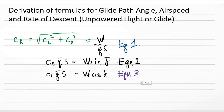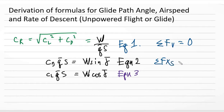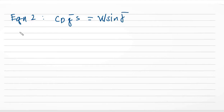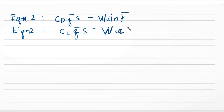Equation 1 comes from the summation of vertical forces equal to zero. Equation 2 came from the summation of forces along x-sub-s equal to zero, giving us C-sub-D times q-bar times S equals W sine gamma-bar. Equation 3 is the summation of forces along the j-sub-s axis equal to zero, giving us C-sub-L times q-bar times S equals W cosine gamma-bar.